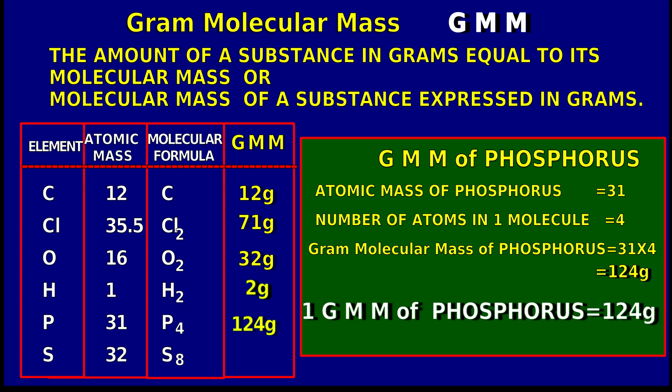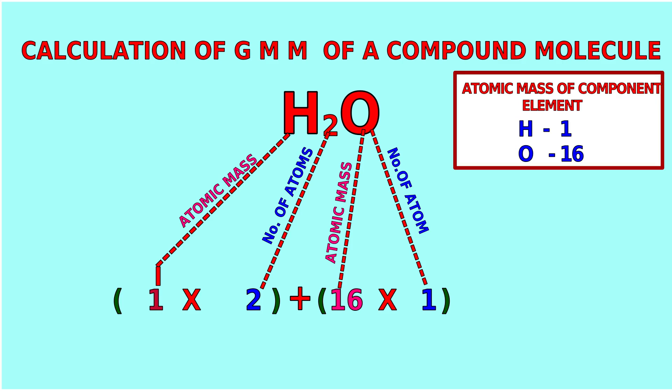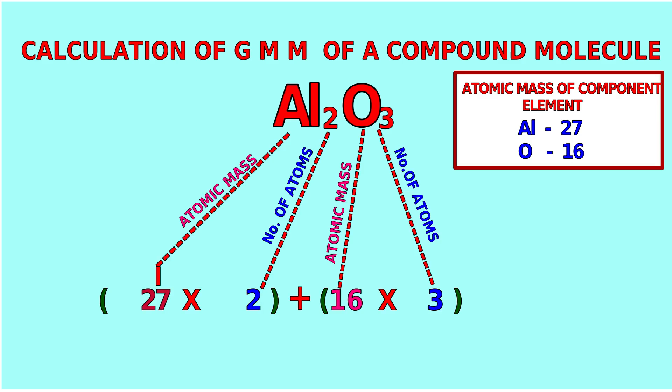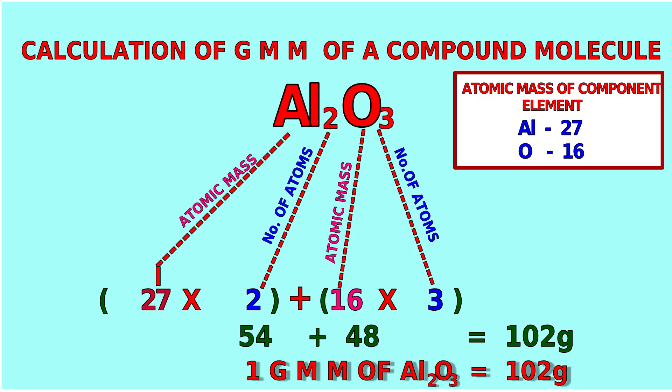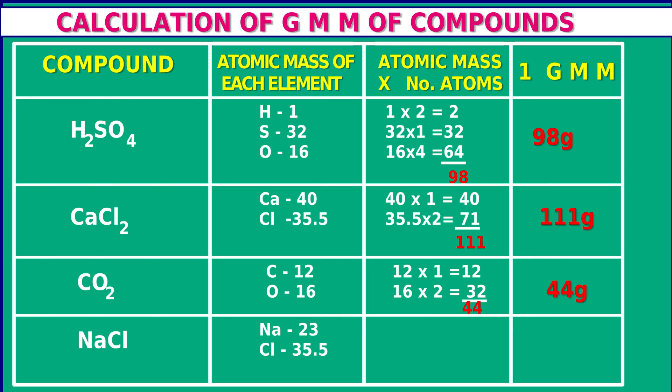How can we calculate gram molecular mass of a compound, for example H2O? In H2O, 2 hydrogen atoms and 1 oxygen atom are there. Let us check how we can calculate it. From this table we can get a clear idea about the calculation of gram molecular mass of different compounds.